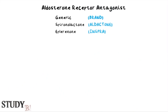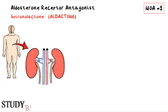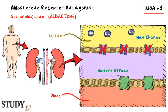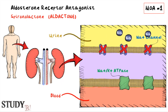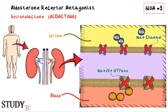Now onto the pharmacology. Spironolactone and eplerenone are two drugs from the class aldosterone receptor antagonist. There are three important mechanisms of action to recall by the end of this video. The first is that they work in the kidneys — medications like spironolactone block the mineralocorticoid receptors that keep sodium channels open and allow sodium reabsorption. They also block the sodium-potassium ATPase channels that allow potassium excretion into the urine.